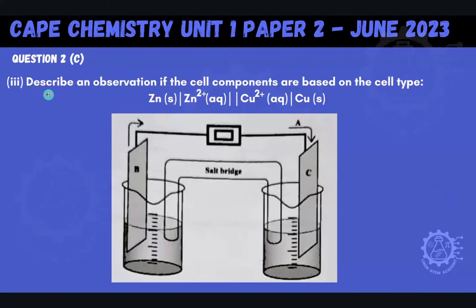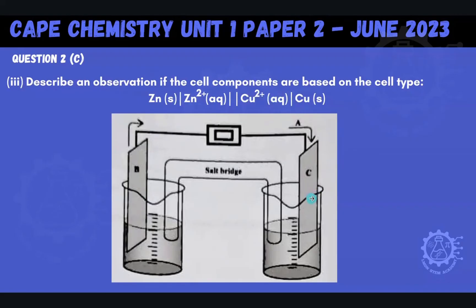For part three, it says describe an observation if the cell components are based on the cell type. Now they're telling us specific components. When we look at the cell diagram — looking to the far left, that represents what will be at our anode. And when we look to the far right, that represents the things that will be at our cathode. Here's what we would expect to observe.